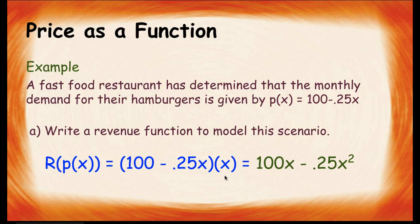And that gives us, if we distribute the x into the parentheses, that gives us 100x minus 0.25x squared. And, thus, we have a quadratic.